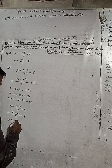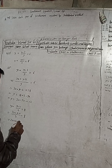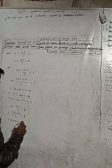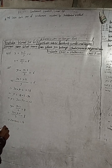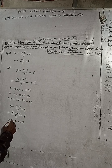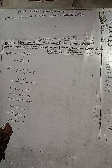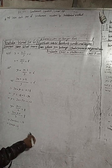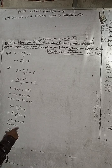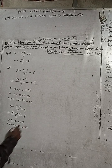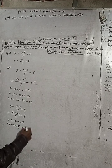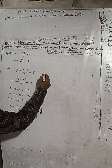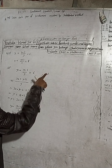So 2y plus y plus 1 equals 2 times 8, which is 16. Simplifying: 2y plus x equals 16, and then minus 1 from both sides gives us 2y plus x equals 15. This is equation 2.